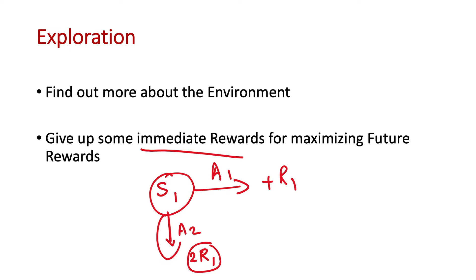This is called Exploration, and continuing on a known action to get a reward is known as Exploitation. Exploration is finding out more about the environment — the new action may give a negative reward or a greater reward, but the agent has no idea. So exploration involves giving up some immediate rewards.